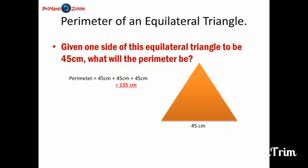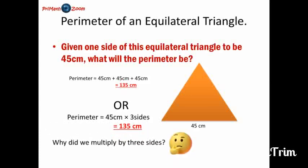But is that the only way? We could do that, or we could do this. We could multiply 45 cm by three sides, and that will also give us 135 cm. But why did we multiply by three sides? Brilliant! Again, we multiplied by three sides because there are three sides in an equilateral triangle, and each of the sides measure 45 cm. Great job!